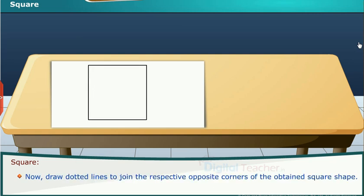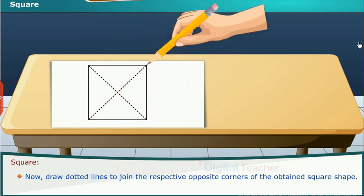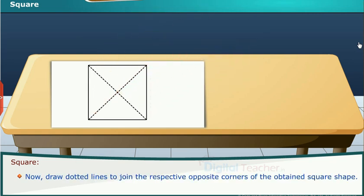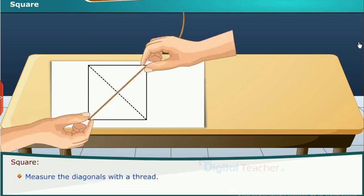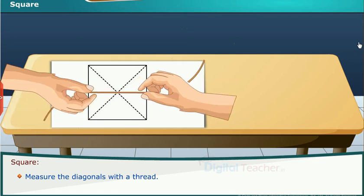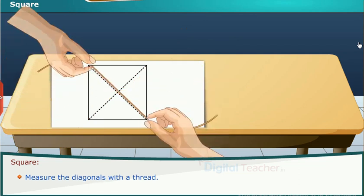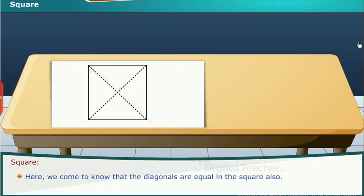Now draw dotted lines to join the respective opposite corners of the obtained square shape. Measure the diagonals with a thread. Here we come to know that the diagonals are equal in the square also.